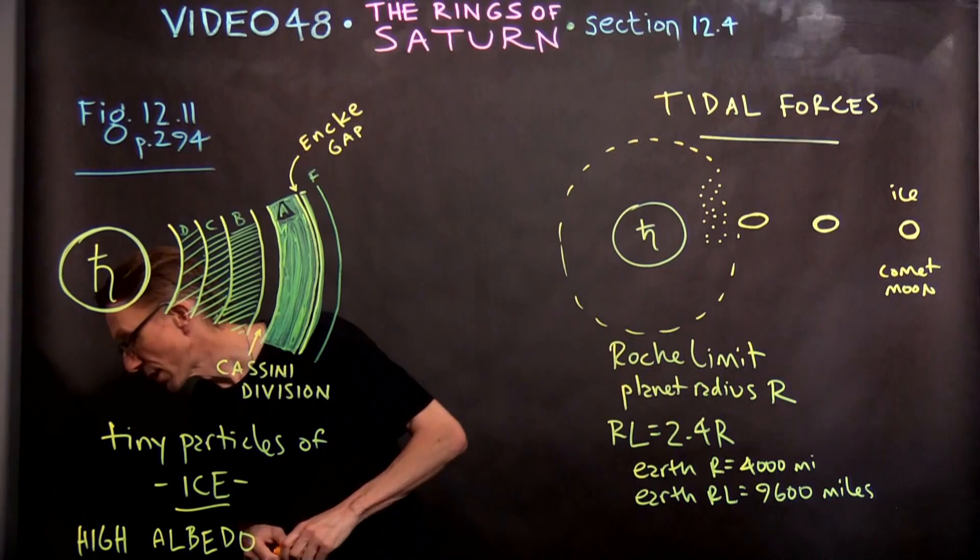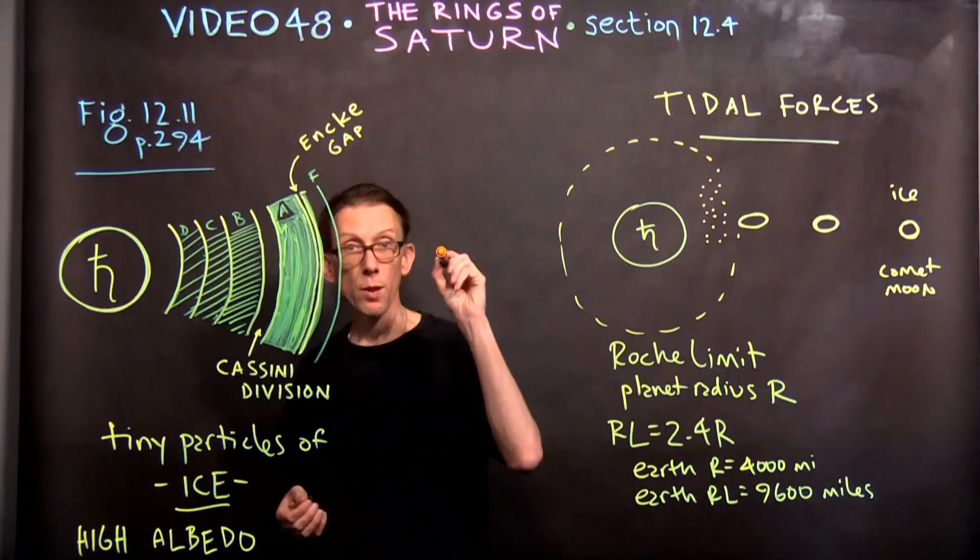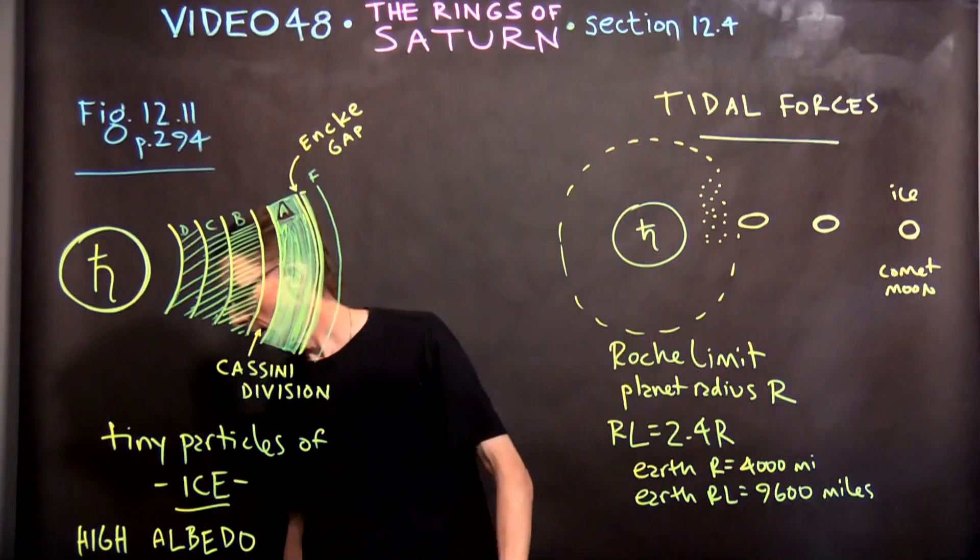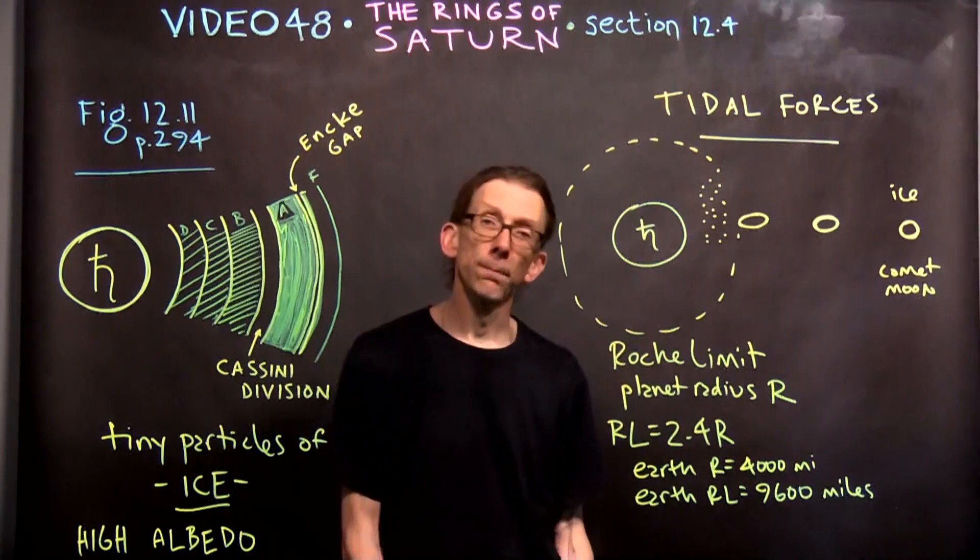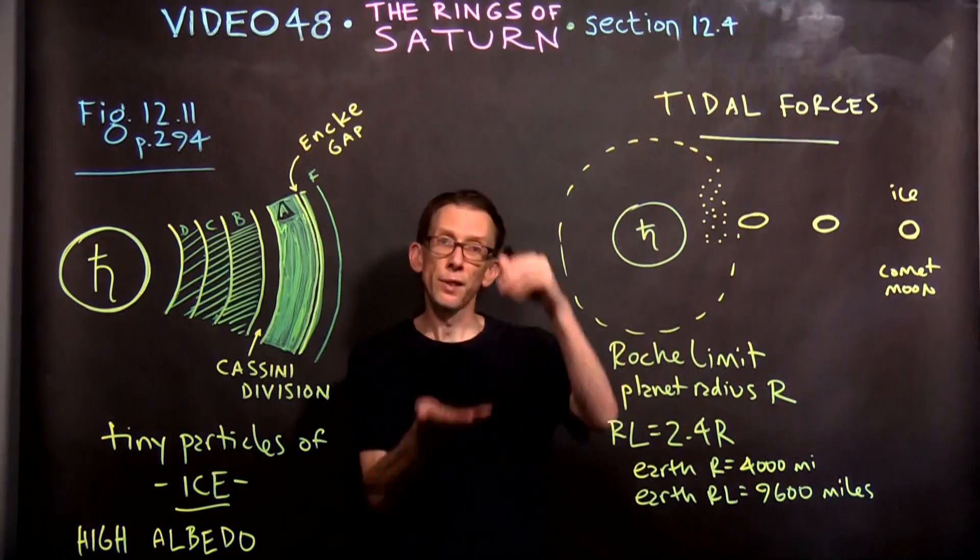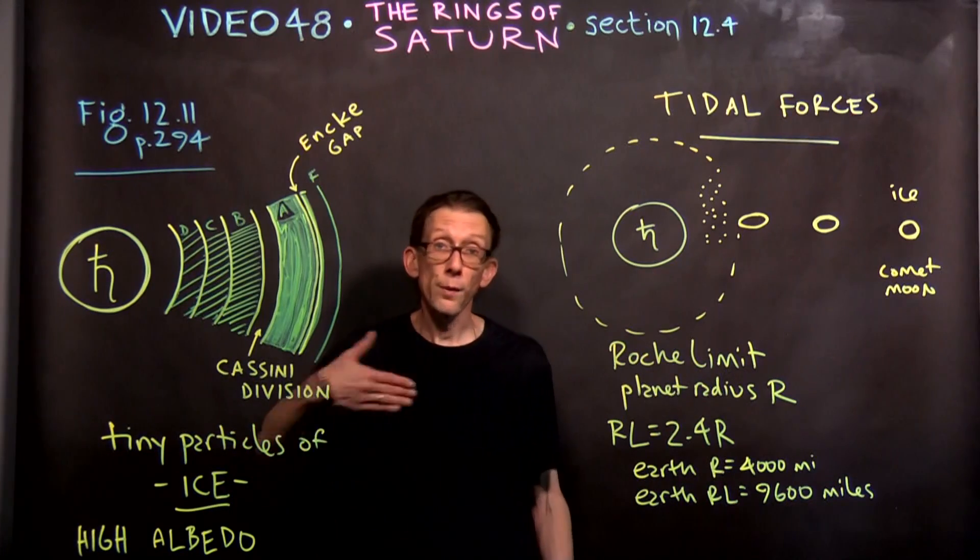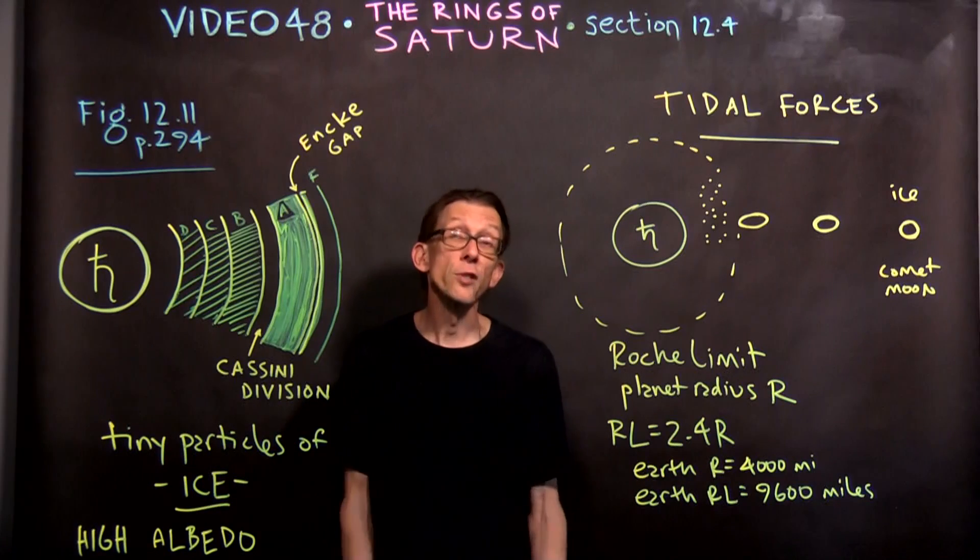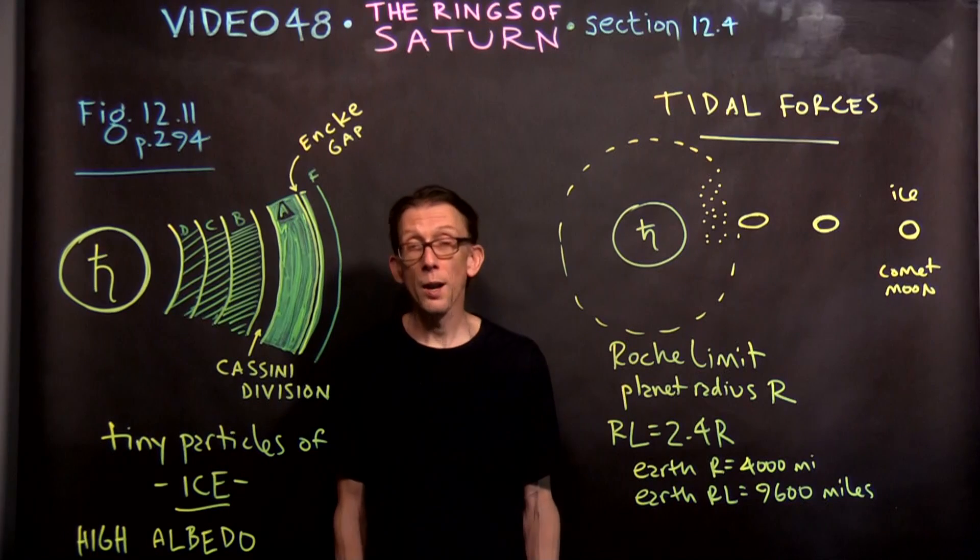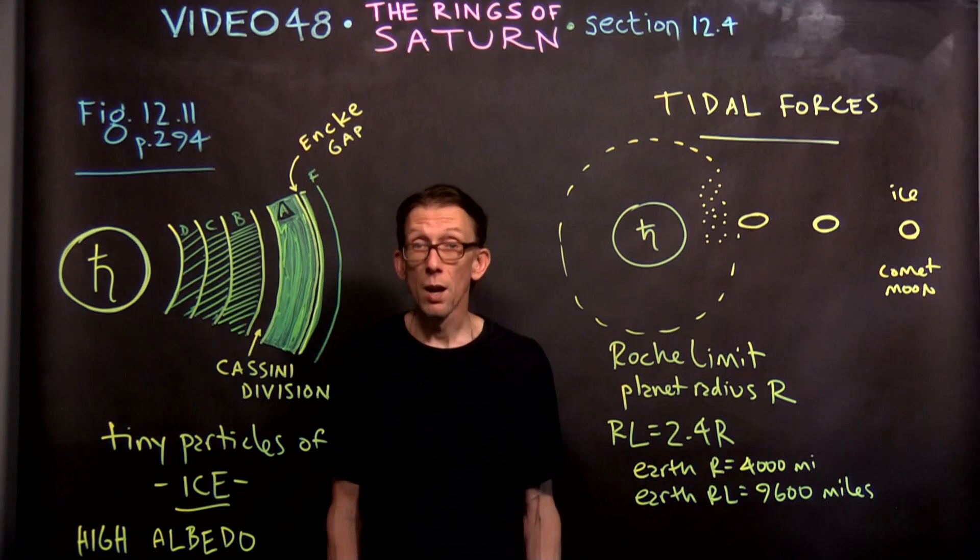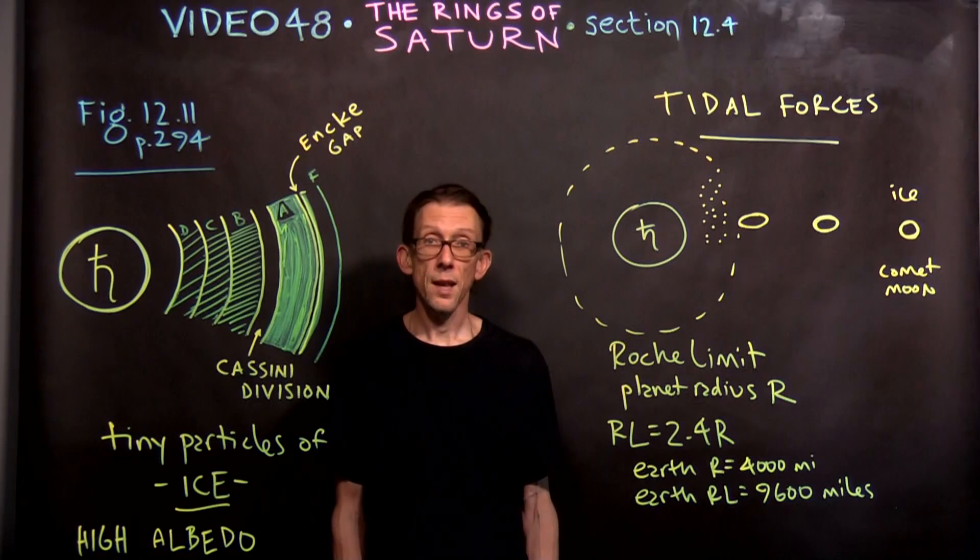I think that's it for this particular video. Next up, the moons of Saturn. The thickness of the rings is about 10 miles. I lost that number a second ago. I said one mile, that's not right. It's about 10 miles thick. Which sounds like a long way, but compared to the size of the rings, hundreds of thousands of miles across, that's nothing. See you in video 49, where we'll talk about the moons of Saturn, which are easily as amusing as Saturn's rings.